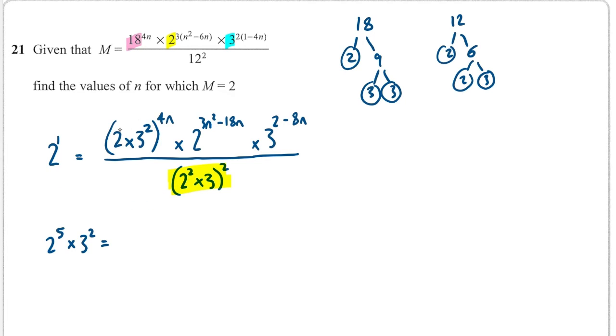And I'm going to expand out this bracket here because I've got 2 to the 4n, and I've got 3 squared to the 4n, which becomes 3 to the 8n. And here I've got 2 to the 3n squared minus 18n. And then I have 3 to the 2 minus 8n.